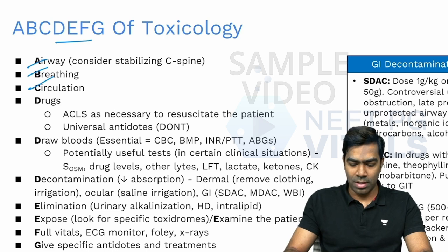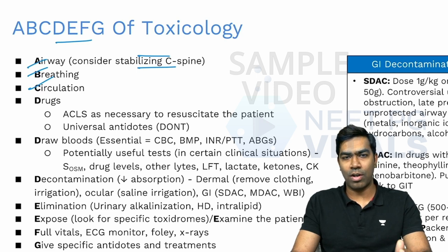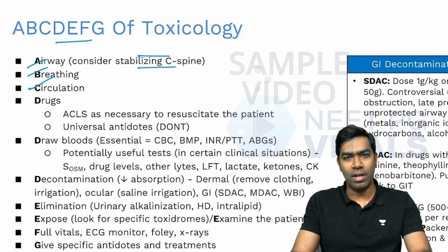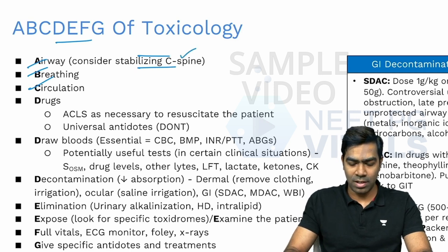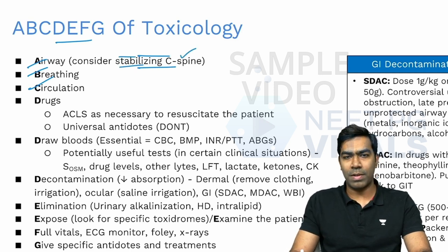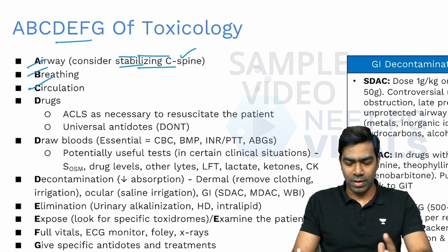There is a lot of chance that a poison patient may have sustained injuries, because they could have tried other modes of suicide like hanging or falling from height, or under the influence of poison could have fallen somewhere. You need to do a quick trauma survey, and if you suspect a possible cervical spine injury, you need to consider stabilizing the cervical spine with special maneuvers.